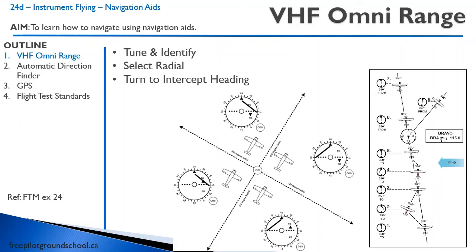The first thing you're going to do is tune and identify the appropriate frequency, and the Morse code identifier is found on your map or approach plate. The next thing you will do is select the appropriate radial that you want to be on or track towards.